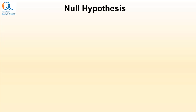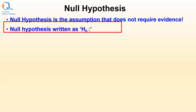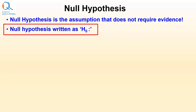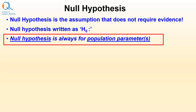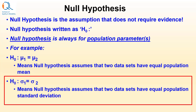In hypothesis tests, once we have defined our problem, we need to formulate what is called the null hypothesis. Null hypothesis is the assumption that actually does not require evidence. Null hypothesis is written as H0 colon. Null hypothesis is always for a population parameter. For example, H0: mu1 = mu2 means null hypothesis assumes that the two data sets have equal population mean. Another example: H0: sigma1 = sigma2 denotes that null hypothesis assumes that the two data sets have equal population standard deviation.